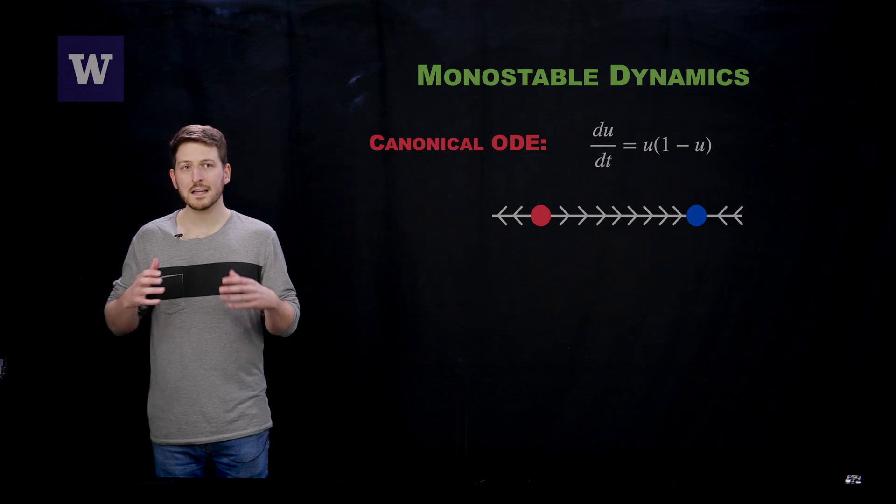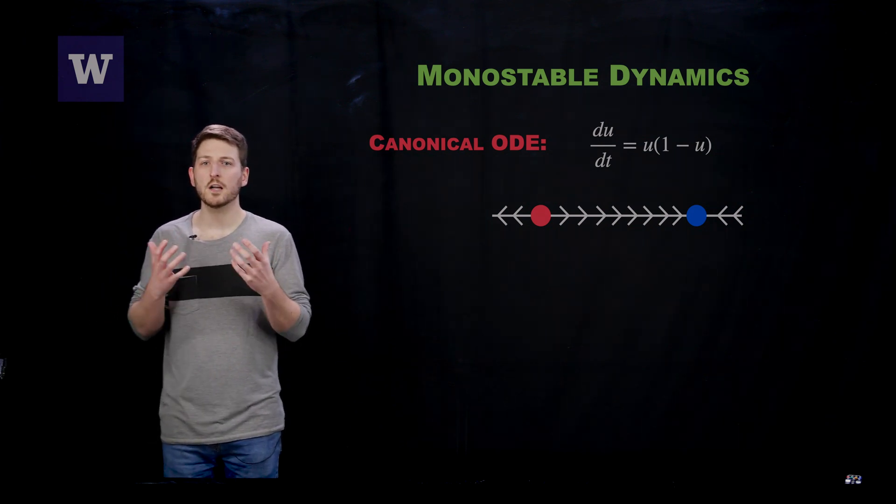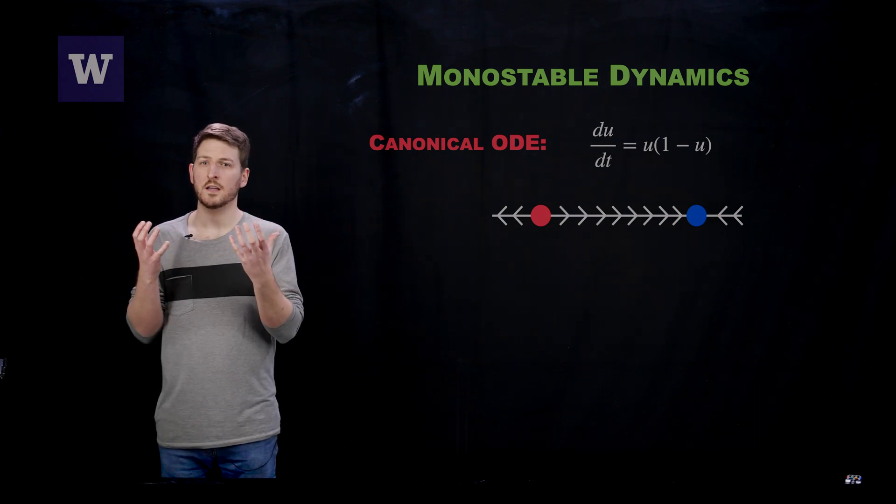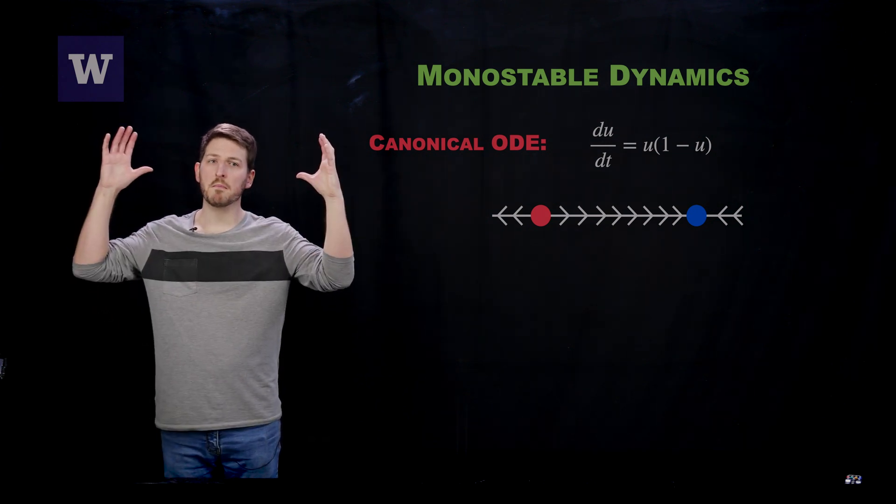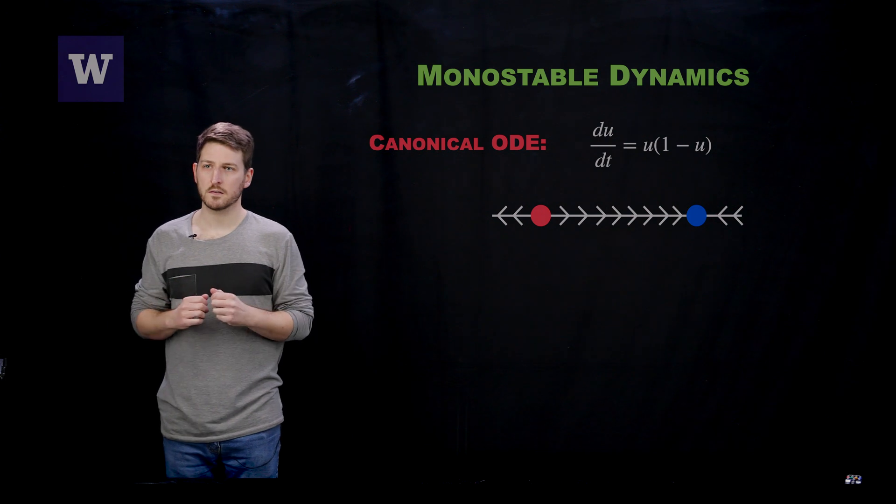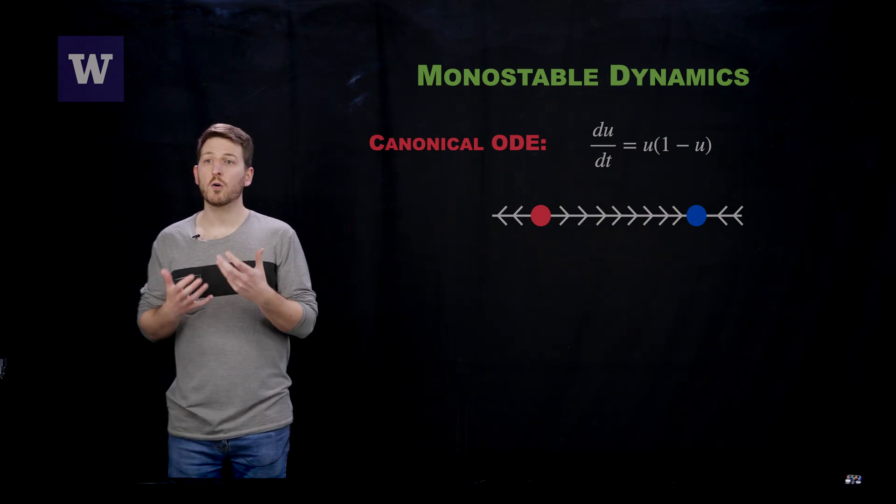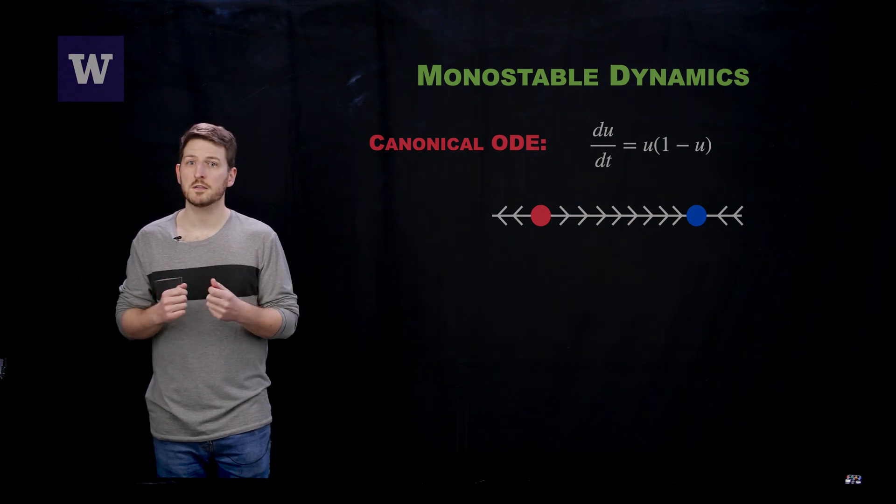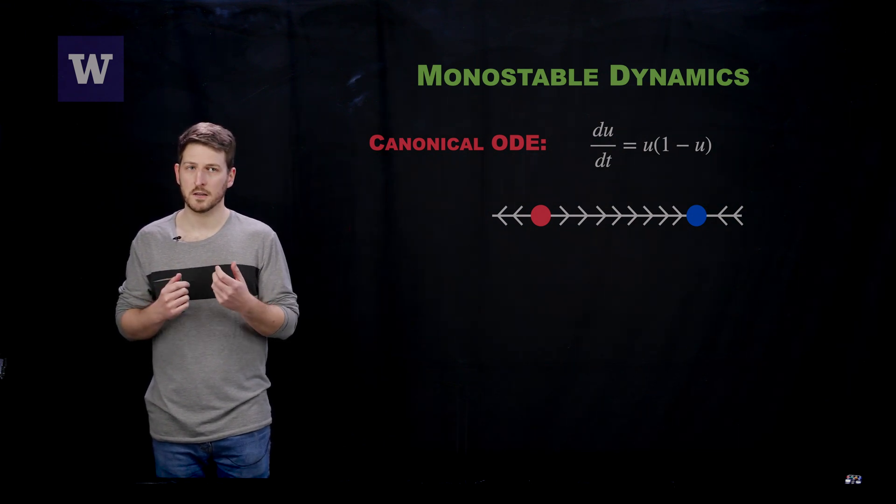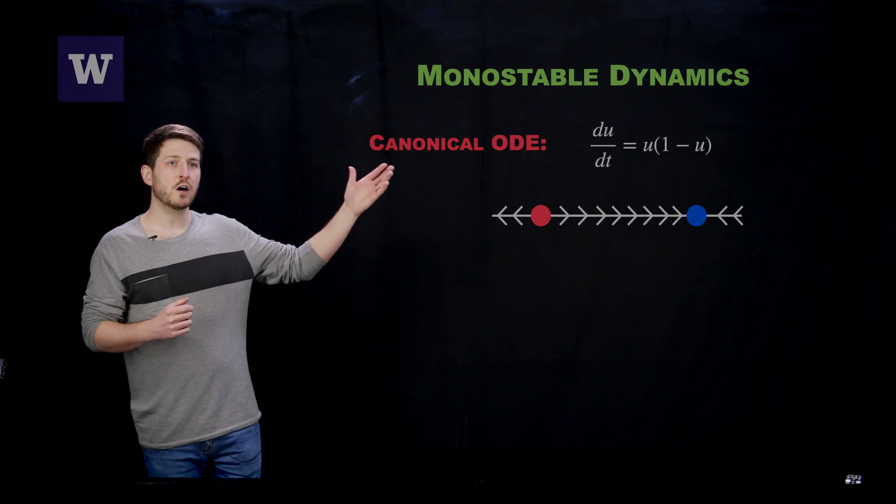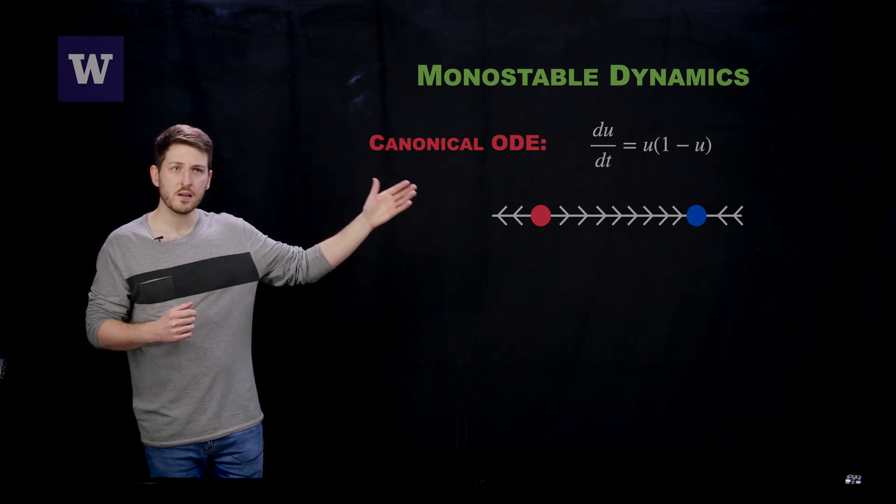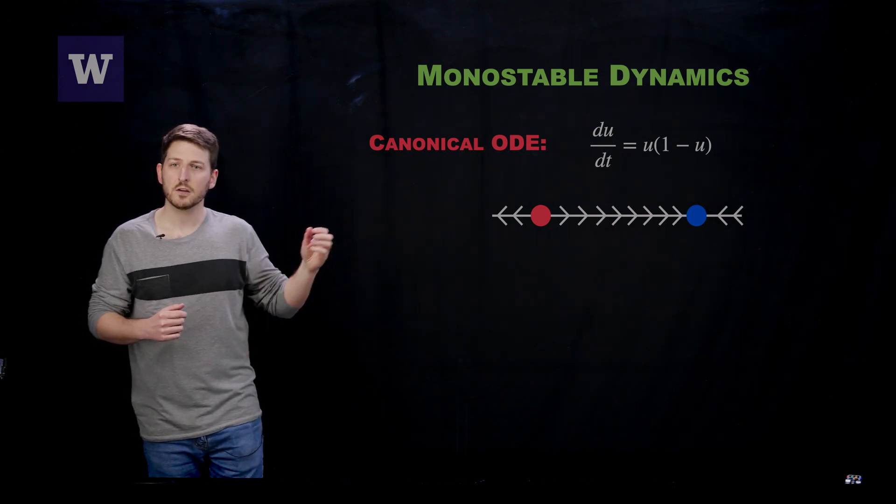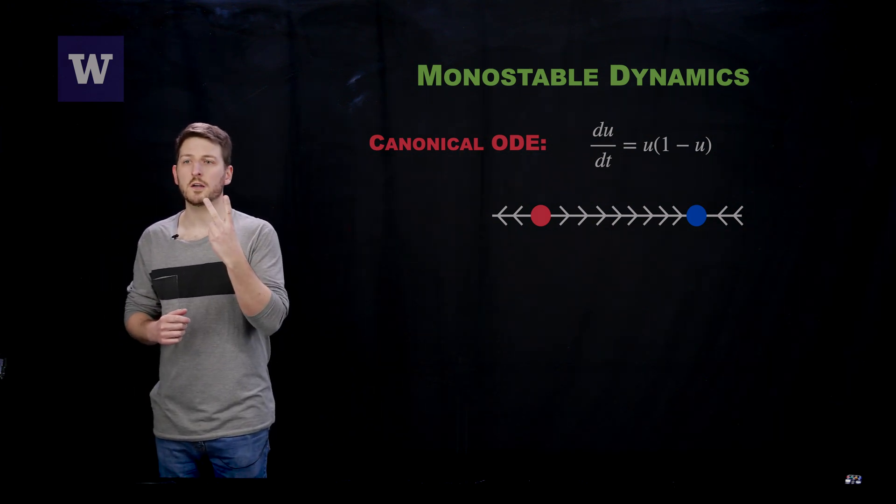What I would like to begin with today is the concept of monostability. Monostability is the presence of a single stable state, typically accompanied by multiple unstable states. In the realm of ordinary differential equations, we have a prototypical system that describes this type of monostability, and that is the so-called logistic differential equation. As you can see from right here, we have a phase line diagram.